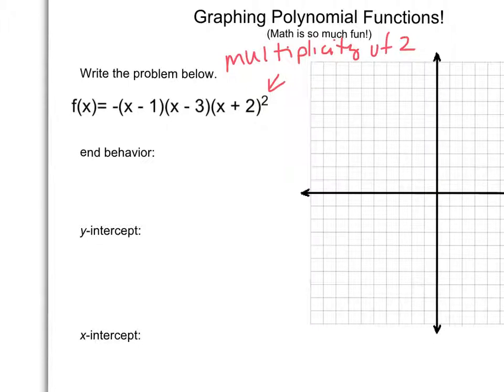All right, let's do a little end behavior action. Now if I'm looking at the end behavior, what is my highest exponent? Now think about it for a second. Kind of, it's not a 2. Here I have an x, here I have an x, and here I have two x's because it's squared. So there is 1, 2, 3, 4. Check that out. So my highest degree here is a 4.